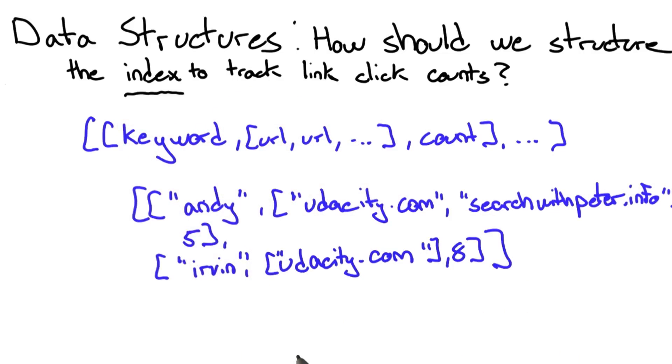The keyword Andy is associated with two URLs, udacity.com and searchwithpeter.info. And the keyword Ervin is associated with udacity.com. And then I have the counts, 5 and 8.